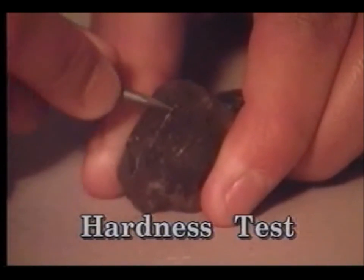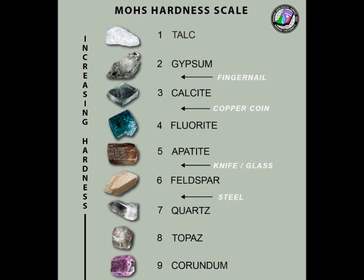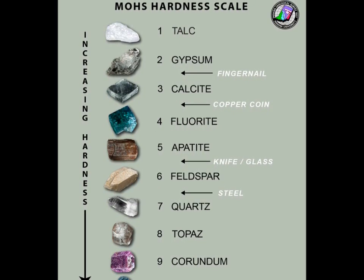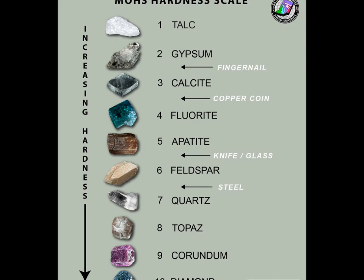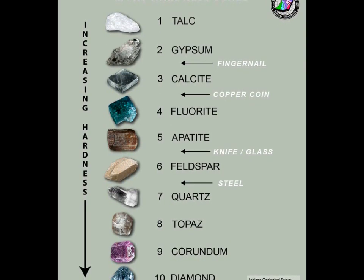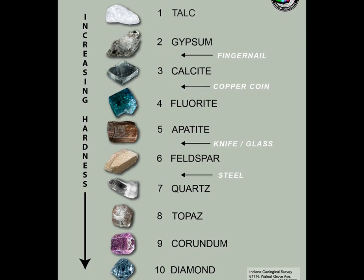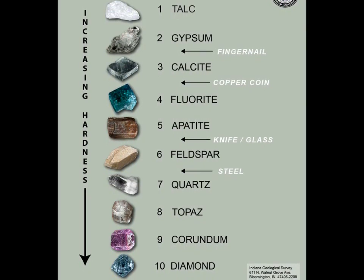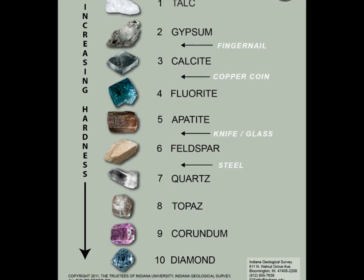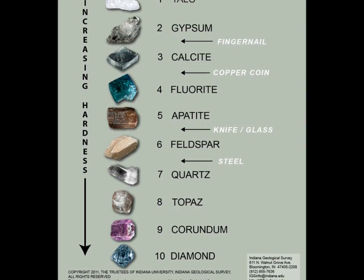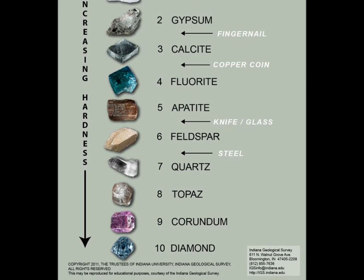We use the Mohs hardness scale of minerals to give a numeric value to a mineral's hardness. The Mohs scale uses a set of ten common index minerals, ranging from talc — used in baby and body powder — at 1, to diamonds, the world's hardest known material, at 10. We use this set of known materials to scratch an unknown sample and compare the results against the Mohs hardness scale.